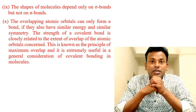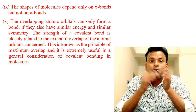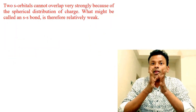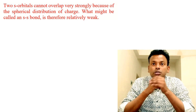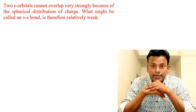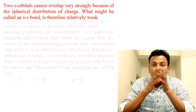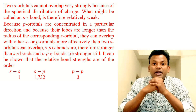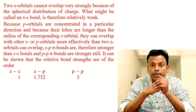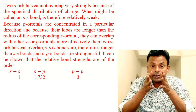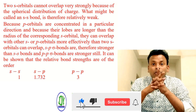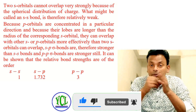This is known as the principle of maximum overlap, and it is extremely useful in the general consideration of covalent bonding in molecules. Two s orbitals cannot overlap very strongly because of the spherical distribution of charge — what might be called an s-s bond is therefore relatively weak. Because p orbitals are concentrated in a particular direction and their lobes are longer than the radius of the corresponding s orbital, they can overlap with other s or p orbitals more effectively than two s orbitals can overlap.